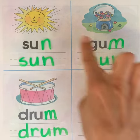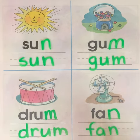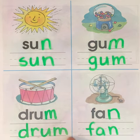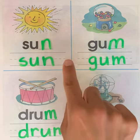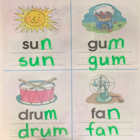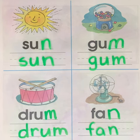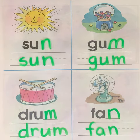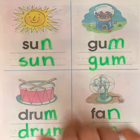Now we're going to say all of the words that we wrote today. Sun. Gum. Drum. Fan. Nicely done. Thank you for helping me with completing the words today and also for writing them out. Please make sure to like this video and subscribe to the channel. Thank you. Bye.